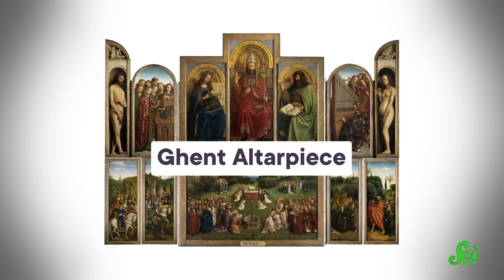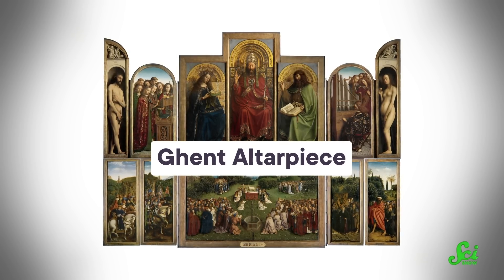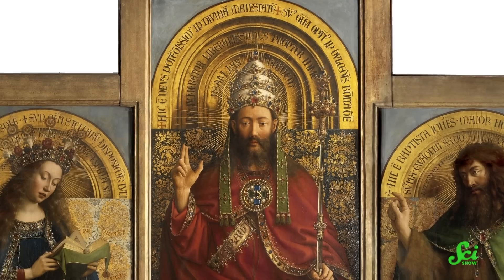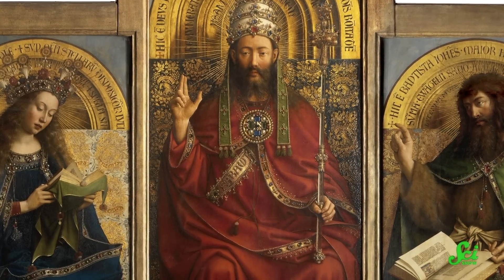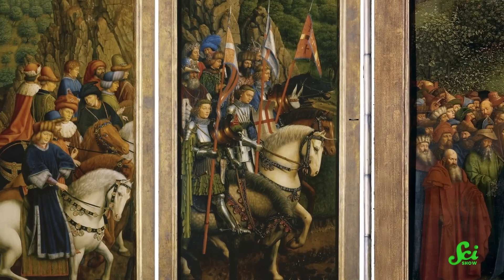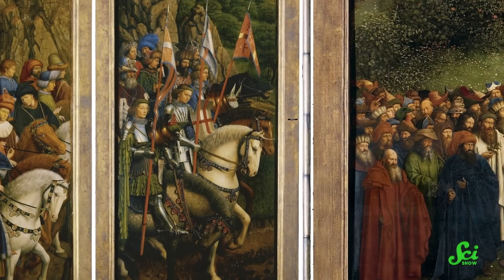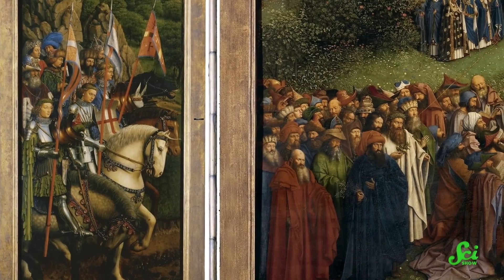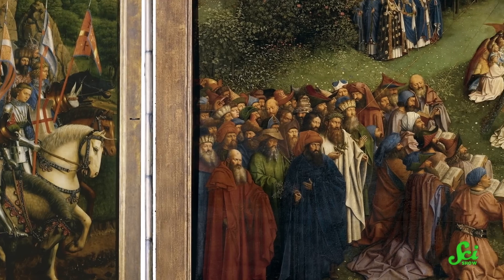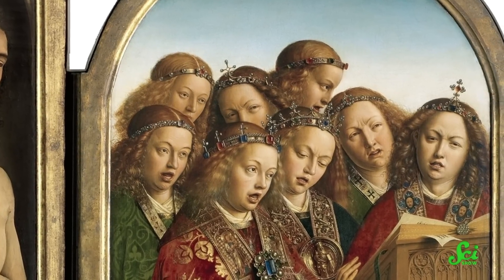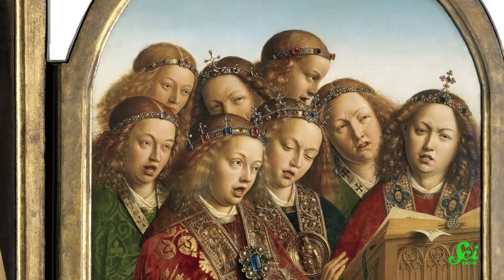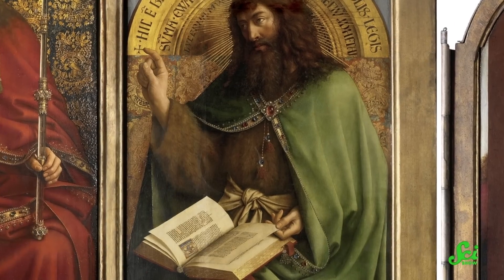This came in handy when it came to solving a mystery tied to the masterpiece known as the Ghent Altarpiece. The Altarpiece is a 15th-century oil painting by the Flemish brothers Hubert and Jan van Eyck. It's made up of more than a dozen different paintings, with side panels on hinges so it can be opened or closed, which lets people display different paintings for different occasions. When the wings are open, it's about as wide as a two-car garage door and almost twice as tall.